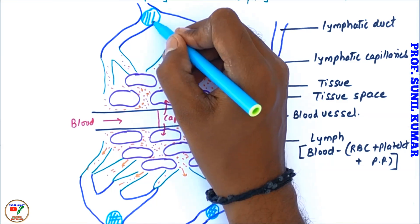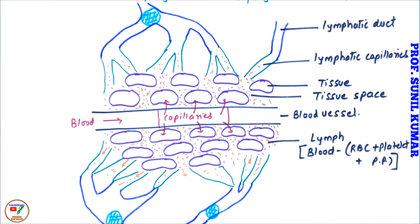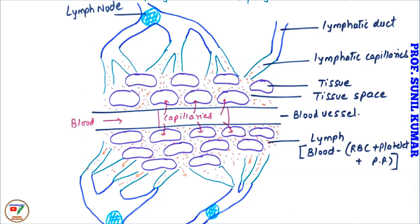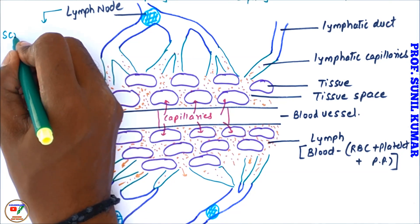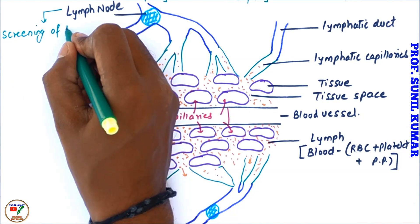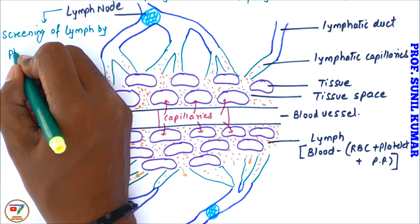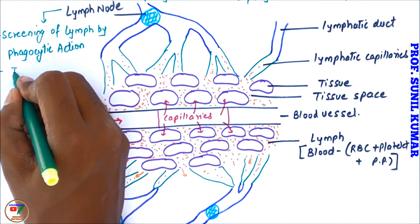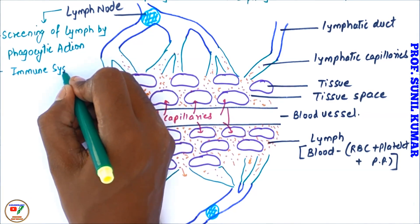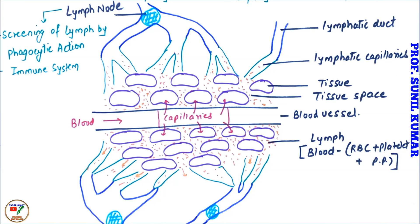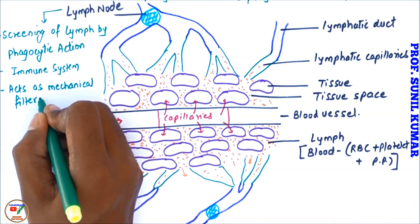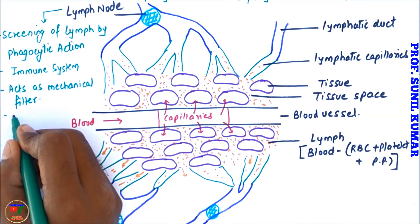This lymph node, why I am drawing it like this: it basically has some filters. What it does, it filters all the lymph and it tries to clear many things. First thing, what it does: it helps in the screening of lymph by phagocytic action. It means if there is any pathogen, there is any bacteria present in the lymph, it will be killed by the phagocytic actions of the WBCs present in the lymph node. The lymph node helps in developing the immune system.